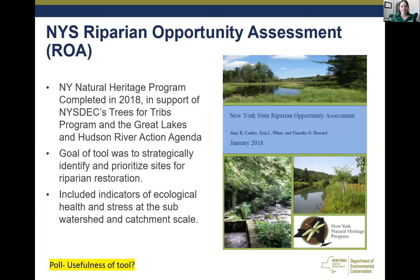The goal of the statewide Riparian Opportunity Assessment was to strategically identify and prioritize sites for riparian restoration to improve habitat, water quality, climate resiliency, and provide flood protection. This was developed in January 2018 in coordination with the New York Natural Heritage Program and other partners. I will invite the members of the team who were able to join us today to introduce themselves.